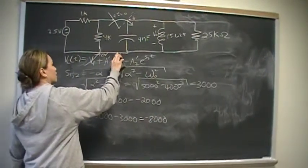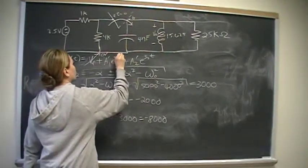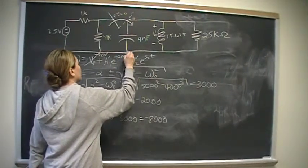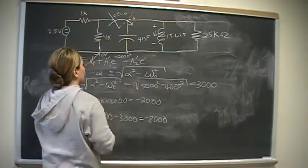So let's replace that here. Negative 2,000t, and this will be negative 8,000t.